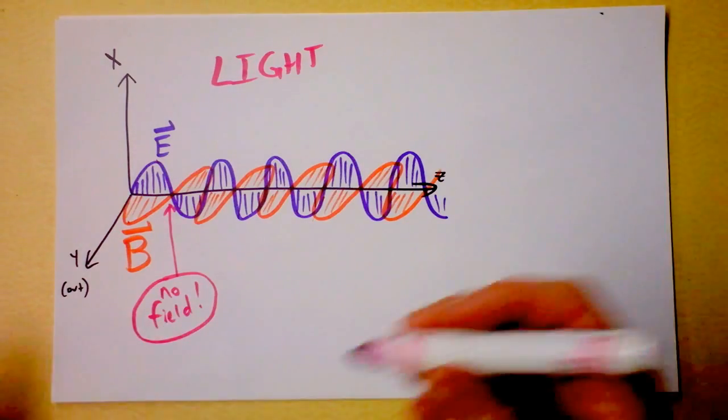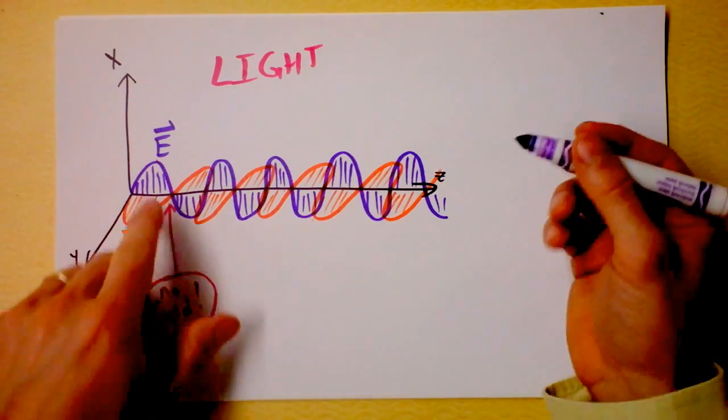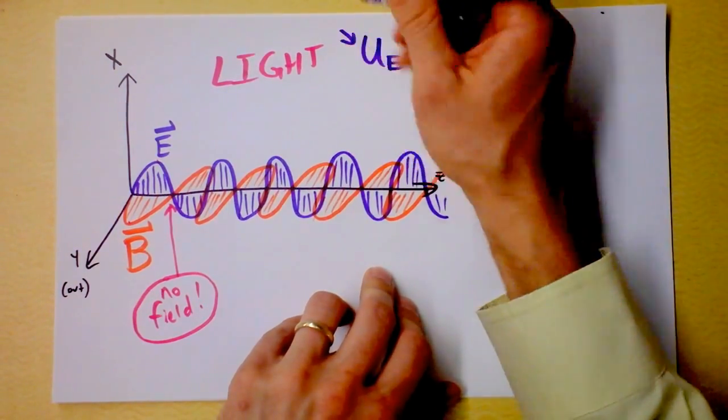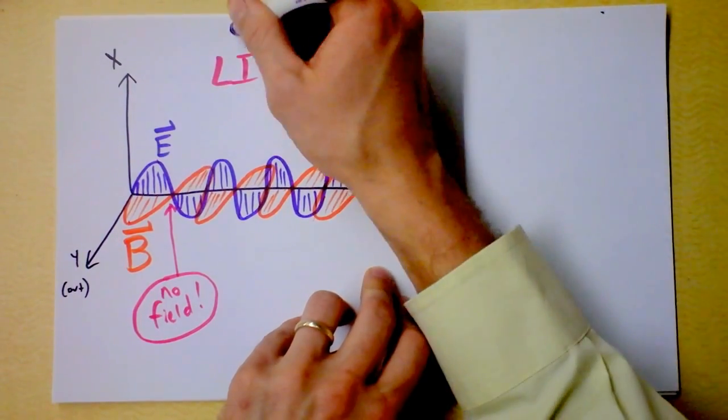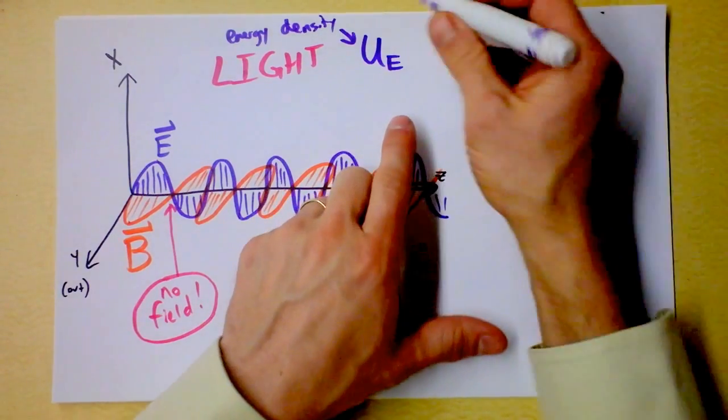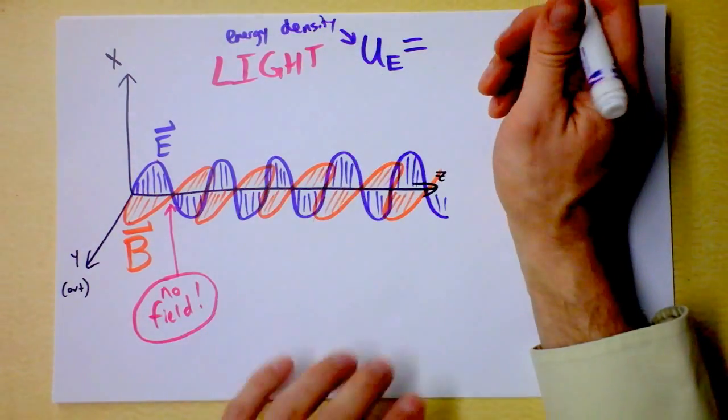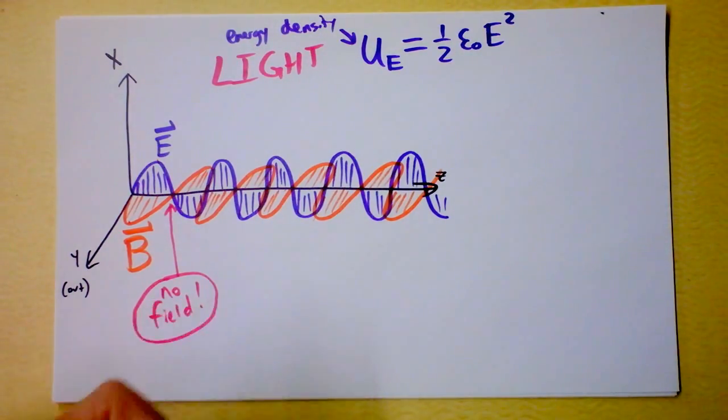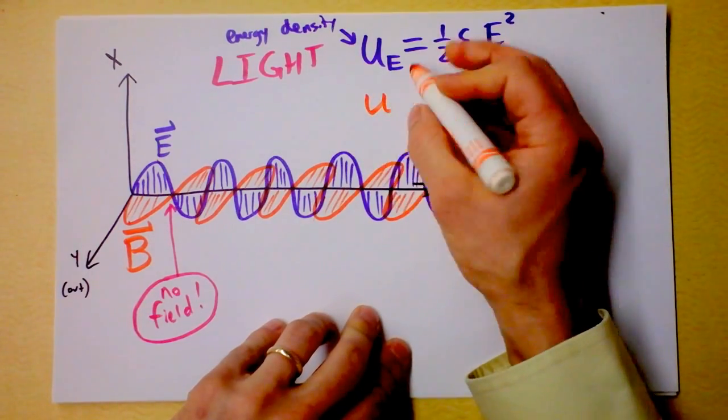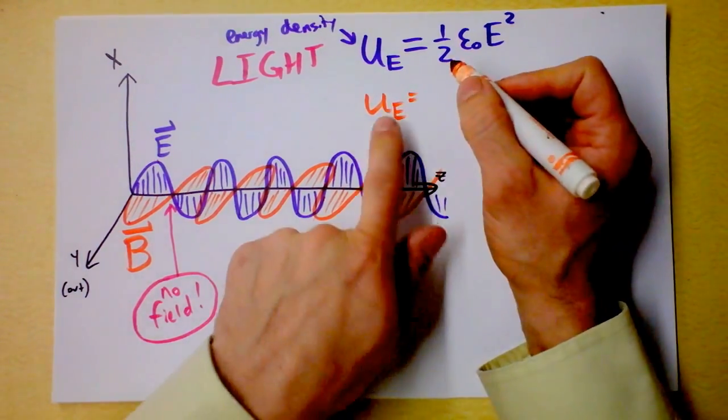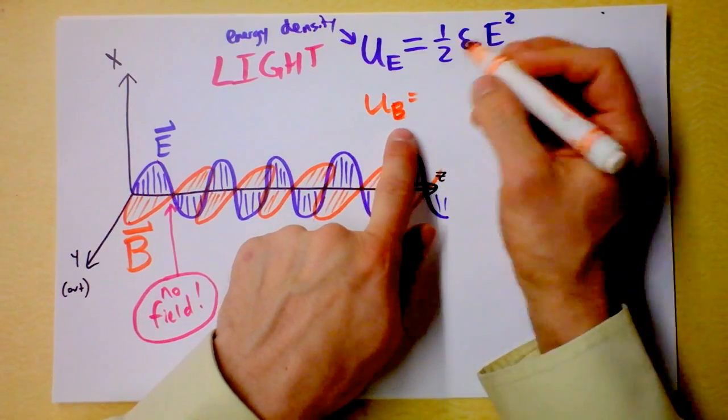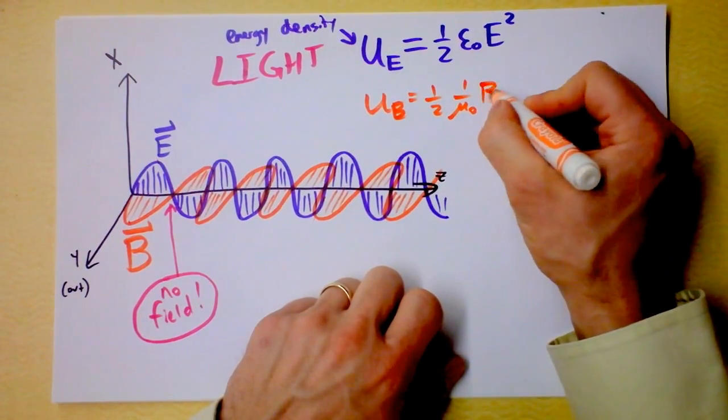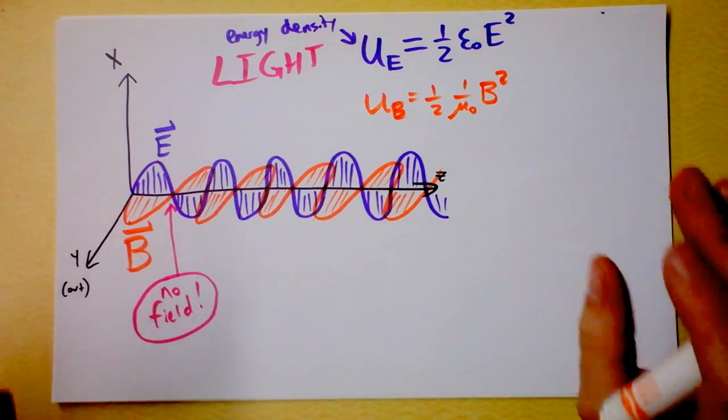Let's recall that the energy stored in an electric field - this is energy density, energy divided by volume - from our study of capacitors was ½ε₀E². From our study of inductors we found that the energy density of magnetic fields is ½(B²/μ₀).